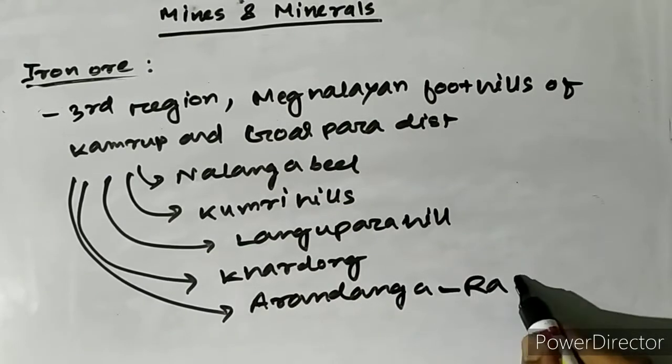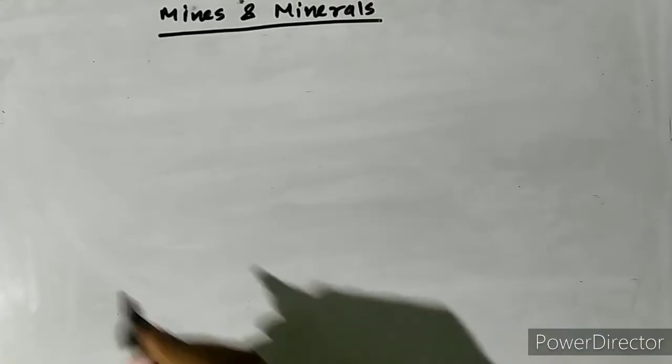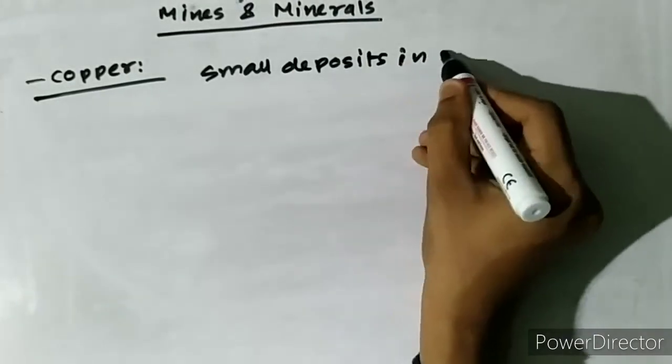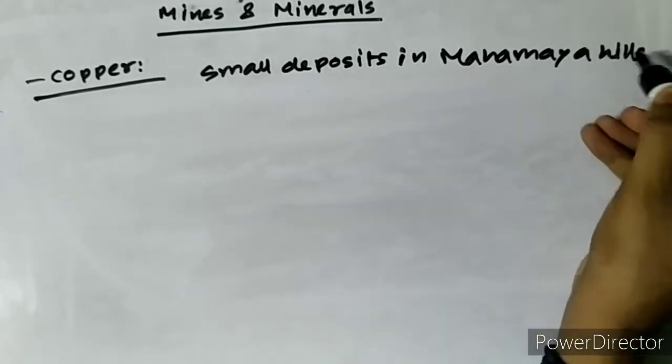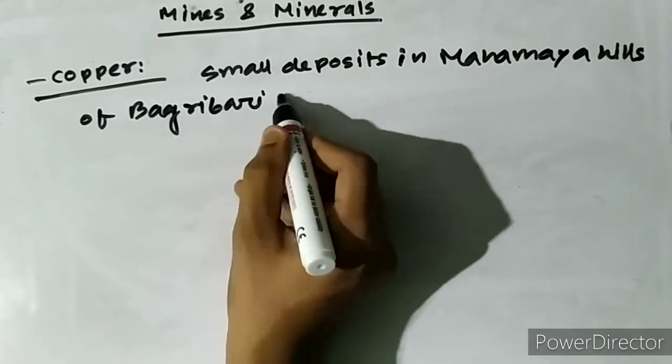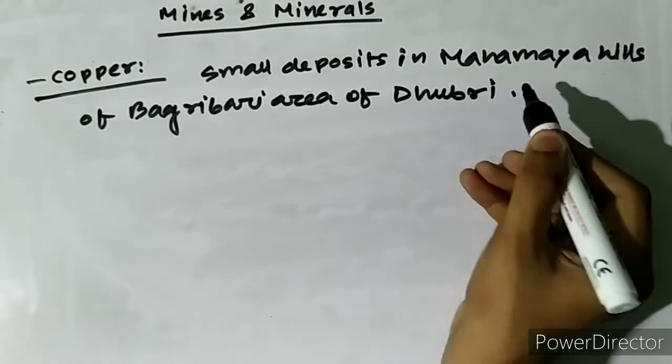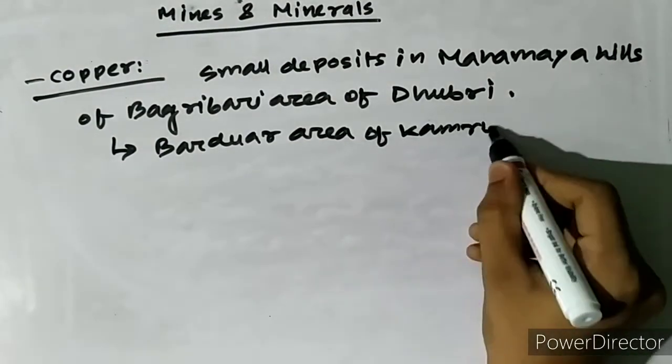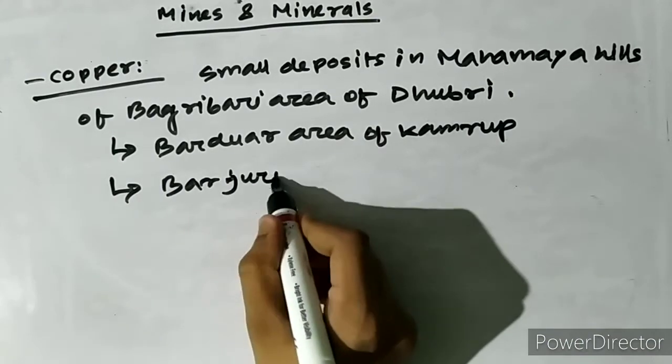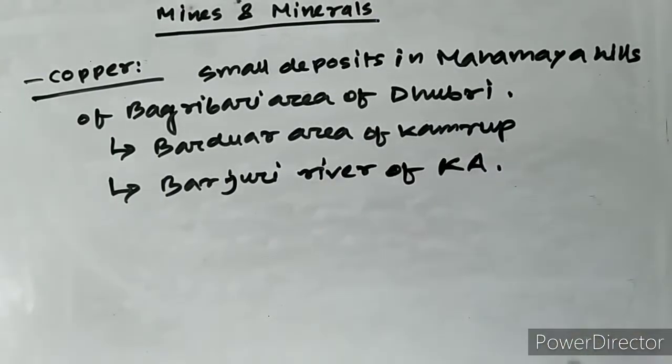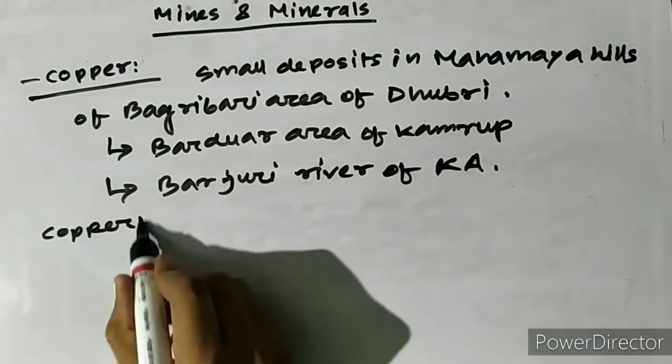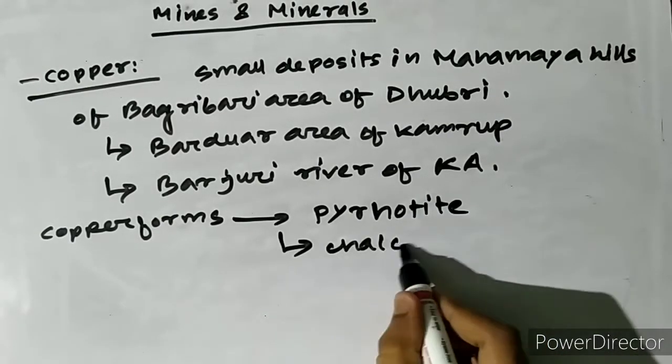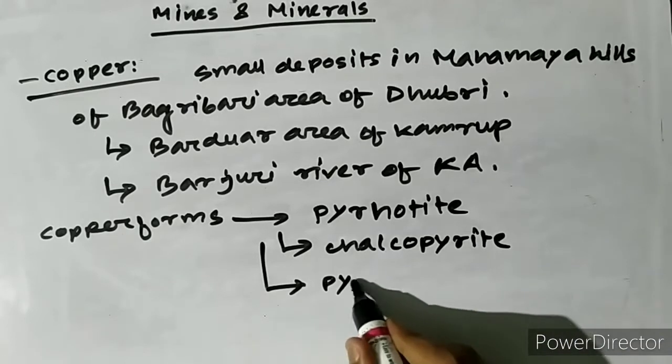For copper, small deposits have been found in Assam at the Mahamaya hills of Bagribari area of Dhubri district. It is also found in Barduar area of Kamrup and in the upper reach of Barjuri river in Karbi Anglong. The copper in this area is found in the form of pyrotite, chalcopyrite, and pyrite in small proportions of about 0.04 percent to 0.39 percent.